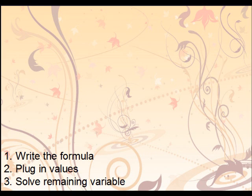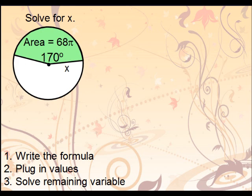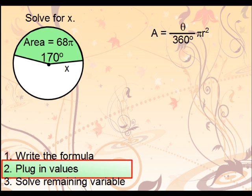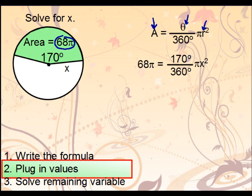All right, let's try another. Let's solve for x here, knowing the area of a sector. Let's start off by writing our formula first, and then we'll plug in the values that we know. We already know what A is. A is the area being 68π. We also know the central angle, it's 170 degrees. The radius we don't know, so this is going to be x. Now that we have all those plugged in, let's go ahead and solve for our remaining variable.